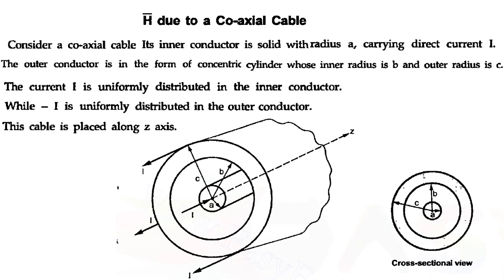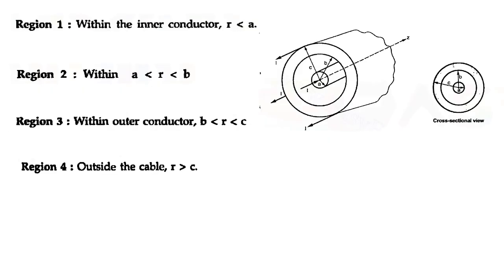For the calculation, we assume the cable is placed along the Z-axis. In the coaxial cable we have four regions. Region 1 is within the inner conductor when R is less than A, where R is the radius of the Ampere path. Region 2 is when R is between A and B. Region 3 is within the outer conductor, so R is between B and C. Region 4 is outside the cable.